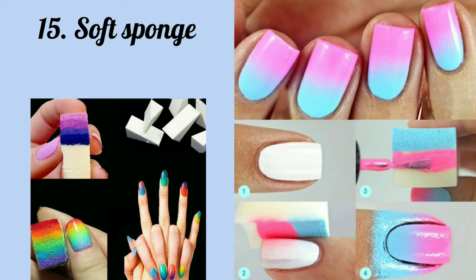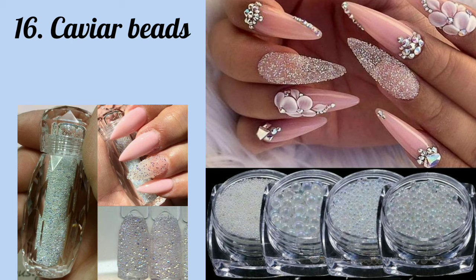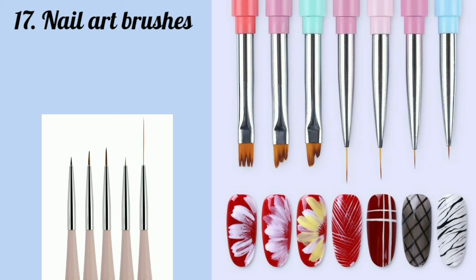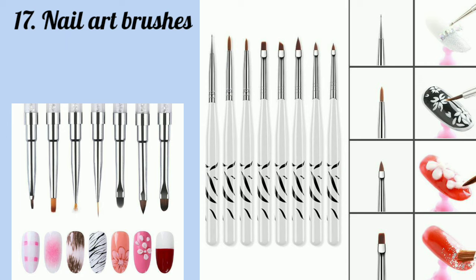Number fifteen is soft sponge — using this you can easily create gradient nail art with different colors. Number sixteen is caviar bits — a type of small metal bits that help give nail art a 3D effect. Number seventeen is nail art brushes — available in many different sizes, each used to create different patterns.